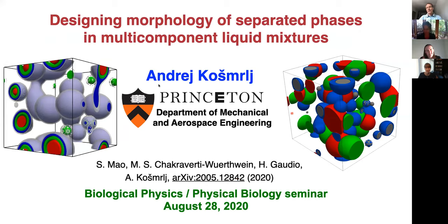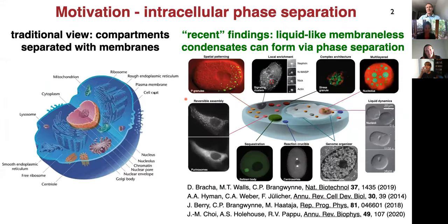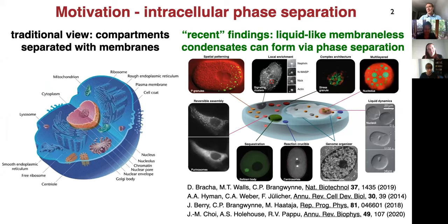What motivated us to study the morphology of separated phases is intracellular phase separation. If you look at the classical biology textbook structure of eukaryotic cells, you would see that it has a lot of internal compartments. For a long time, it was thought they're physically separated from the rest of the environment via membranes. But in the last decade or so, it was recognized that there are also membraneless organelles or condensates, which form via classical liquid-liquid phase separation.